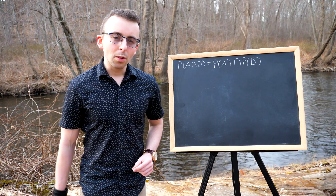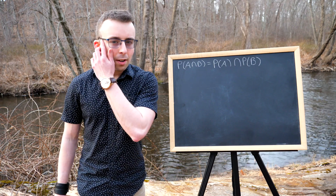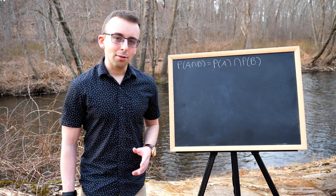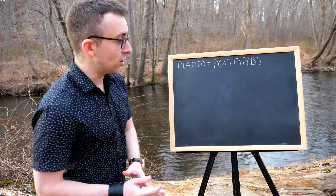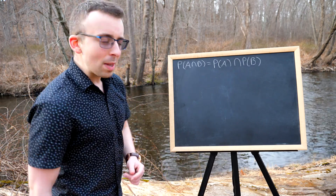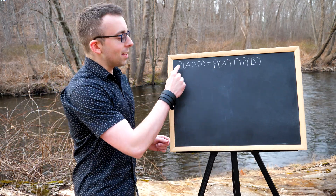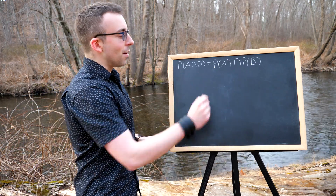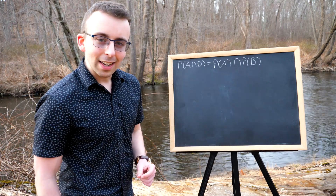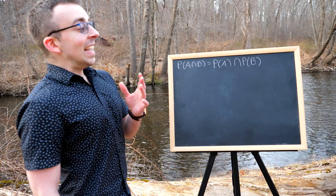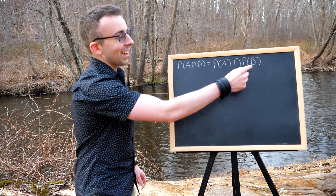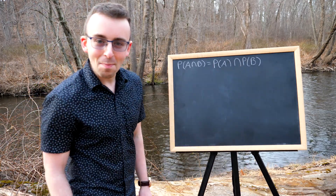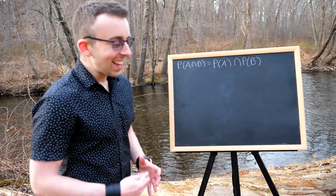Howdy folks! I'm here in the woods with my chalkboard again to answer a very pressing question, which is how do we prove that the power set of A intersect B is equal to the intersection of their power sets?